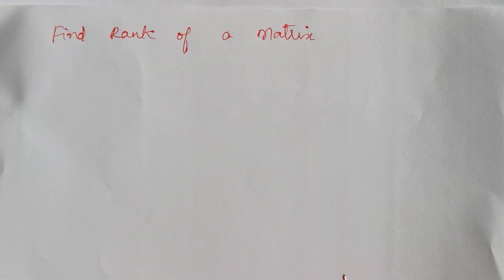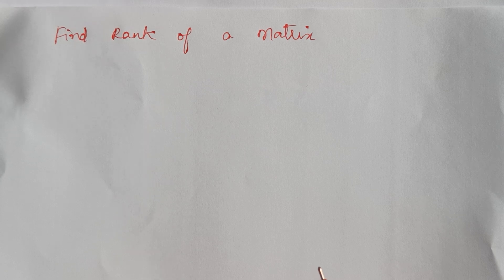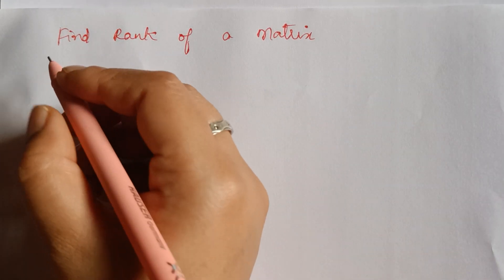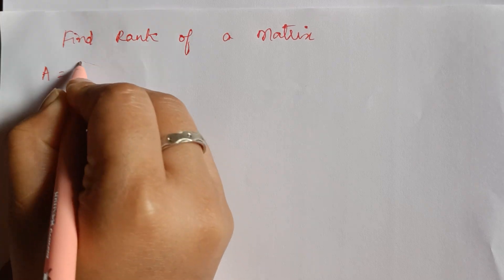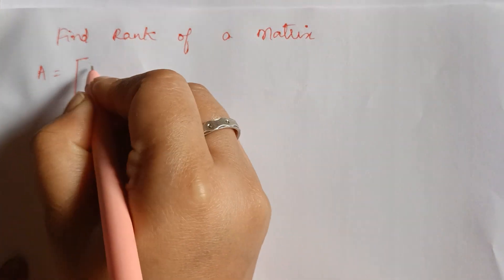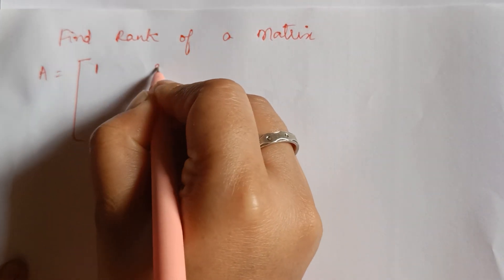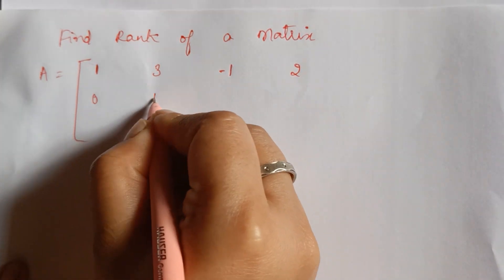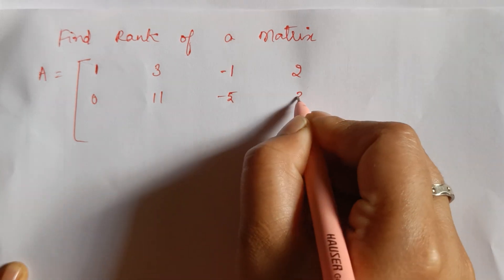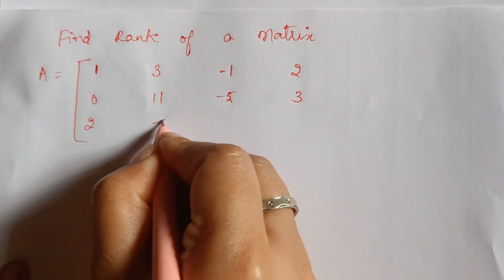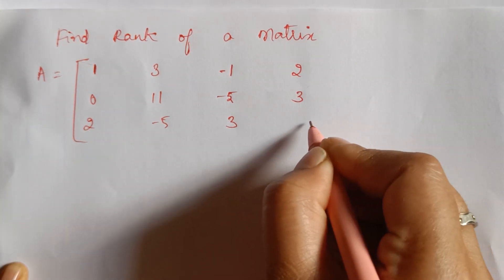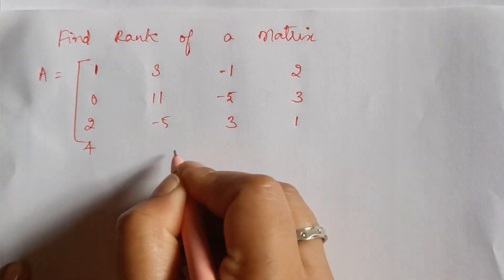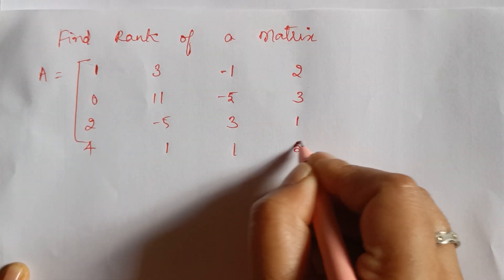Hello everyone, welcome back to my YouTube channel 'Learn with Sume.' In this video, we are going to find the rank of a matrix using another example. So let me write down the question. Matrix A is equal to: 1, 3, -1, 2; 0, 11, -5, 3; 2, -5, 3, 1; then 4, 1, 1, and 5.